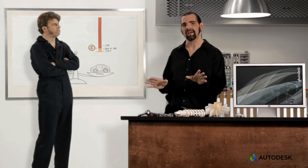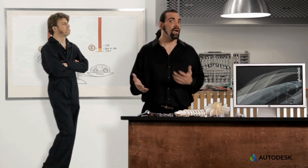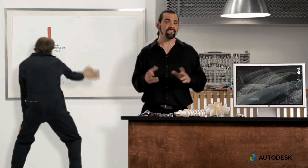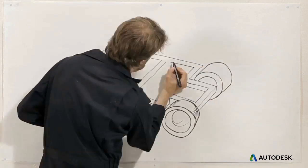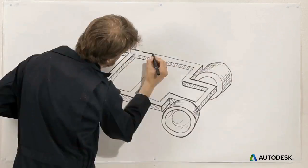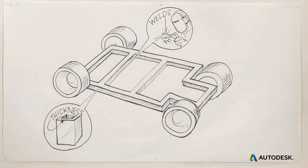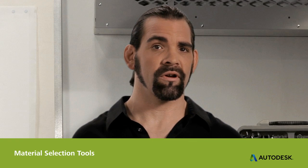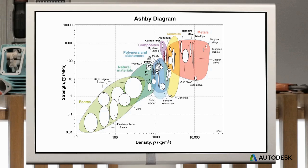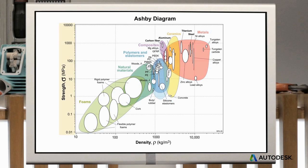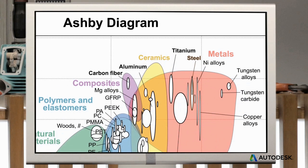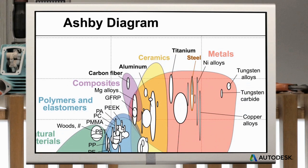But keep in mind that different materials may need different geometry and manufacturing. For example, aluminum parts in a chassis will have thicker walls and different welds. When you graph materials based on their properties, it's called an Ashby diagram. Here's one of strength versus density to help us find strong and light materials for the chassis — here's steel and here's aluminum.